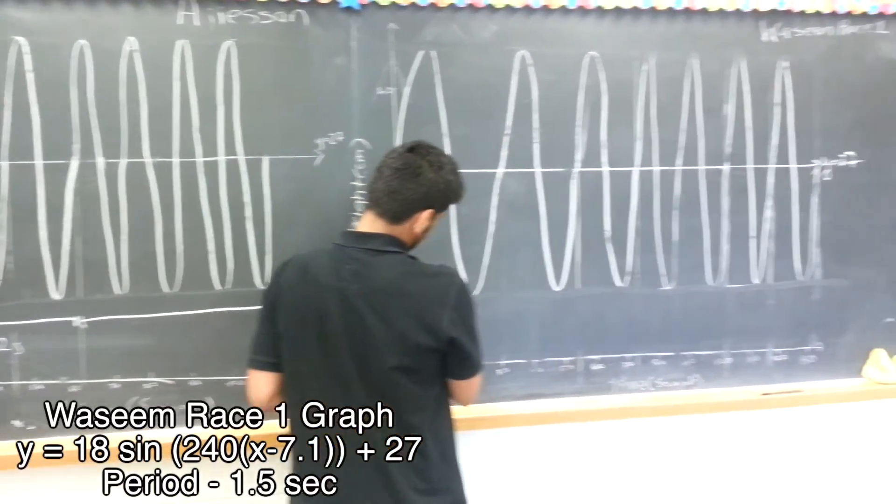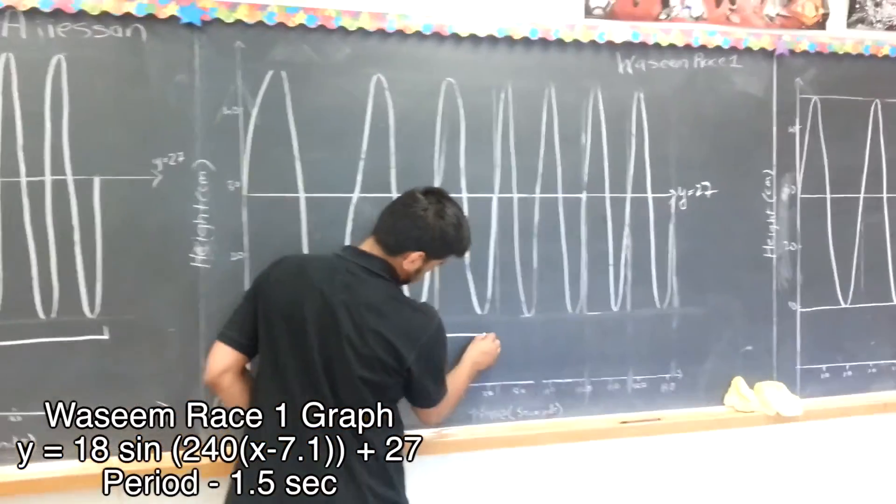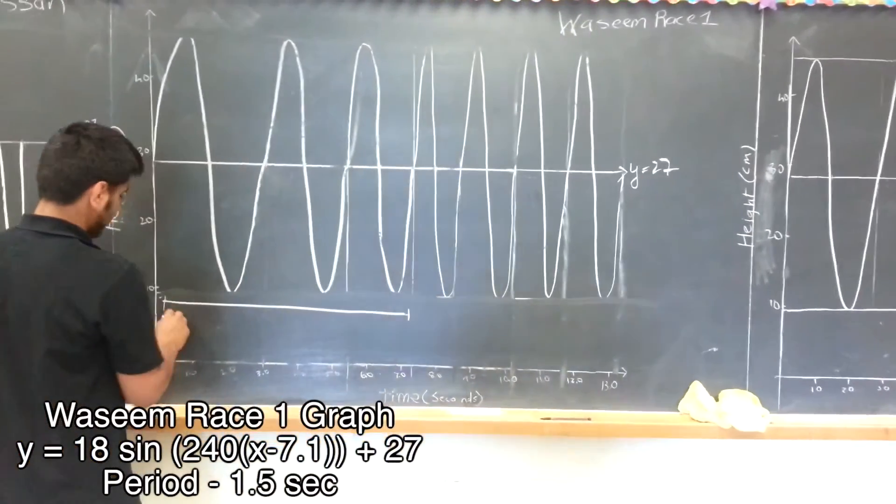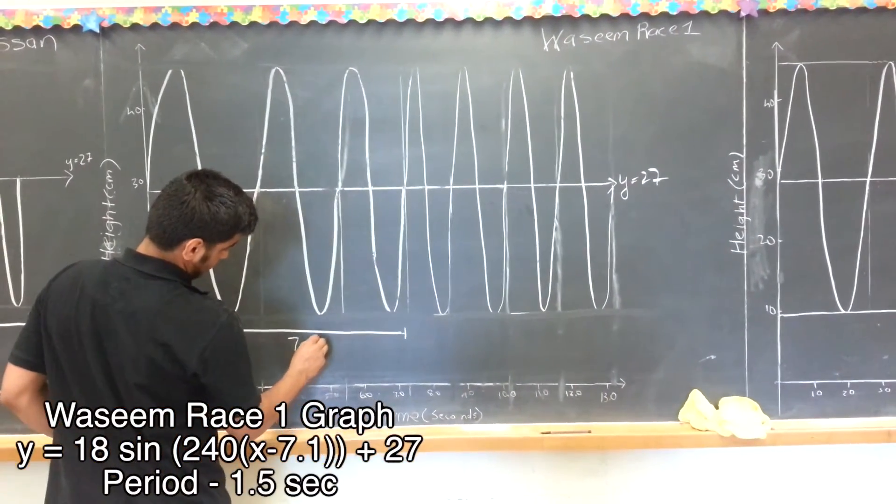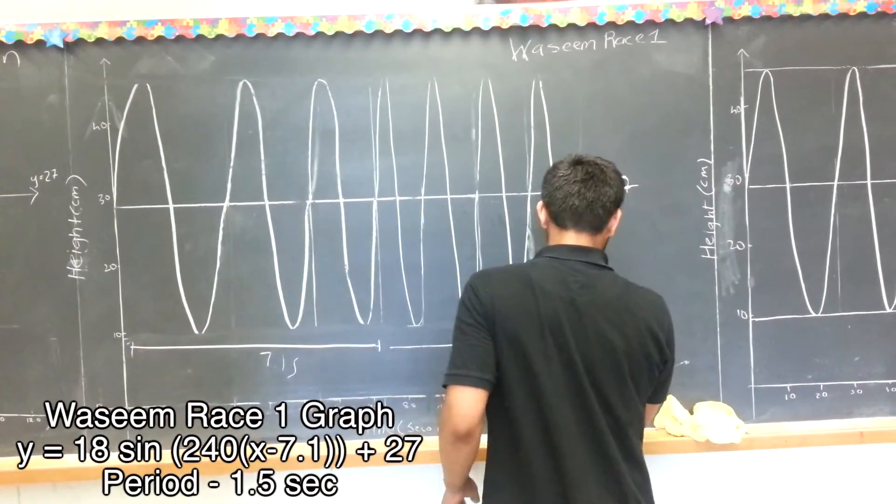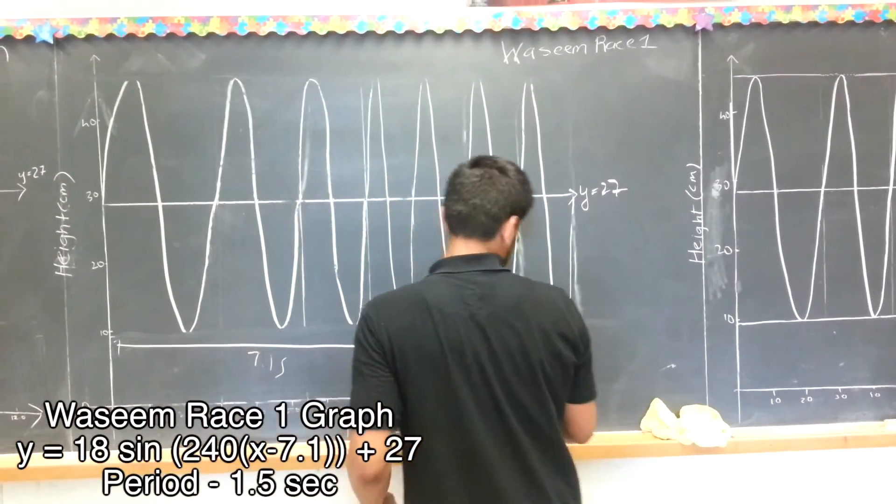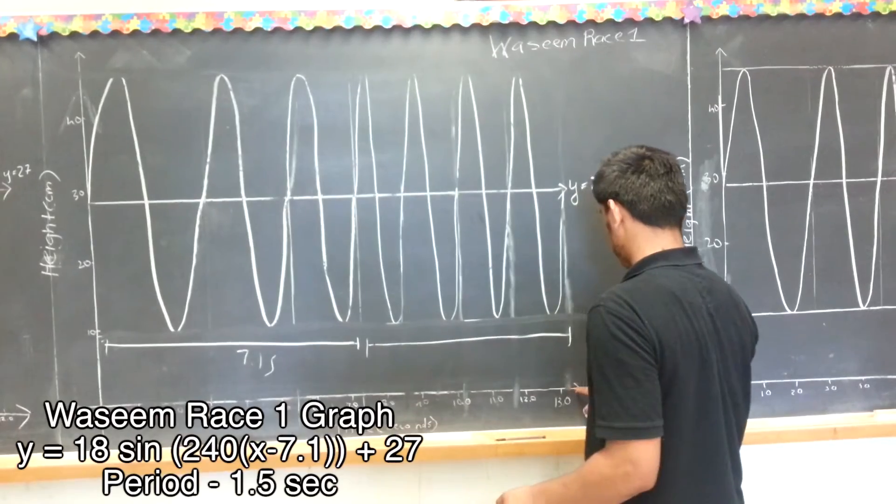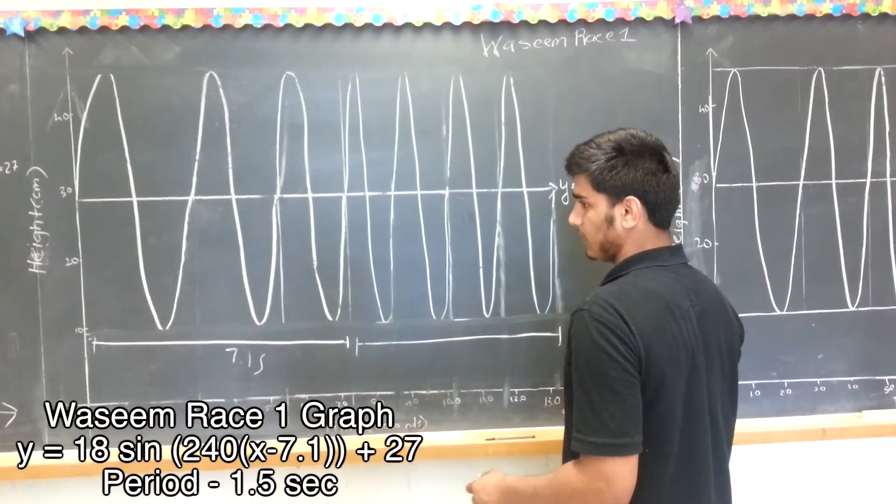For me, I took from here to like 7.1 seconds, that's more than him. And then from here, I became periodic and my graph, I mean, I finished the race in like 13 seconds, which is why I lost.